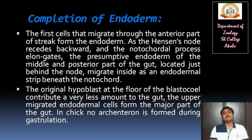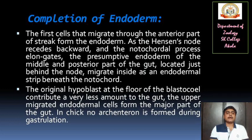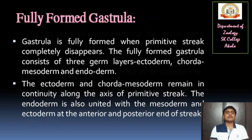Now we will see the completion of endoderm. The first cells that migrate through the anterior part of the streak form the endoderm. As Hensen's node recedes backward and the notochordal process elongates, the presumptive endoderm of the middle and posterior part of the gut, located just behind the node, migrates inside as an endodermal strip beneath the notochord. The original hypoblast and floor of the blastocoele contribute very little to the gut. The upper migrated endodermal cells form the major part of the gut in chick. No archenteron is formed during the process of gastrulation.